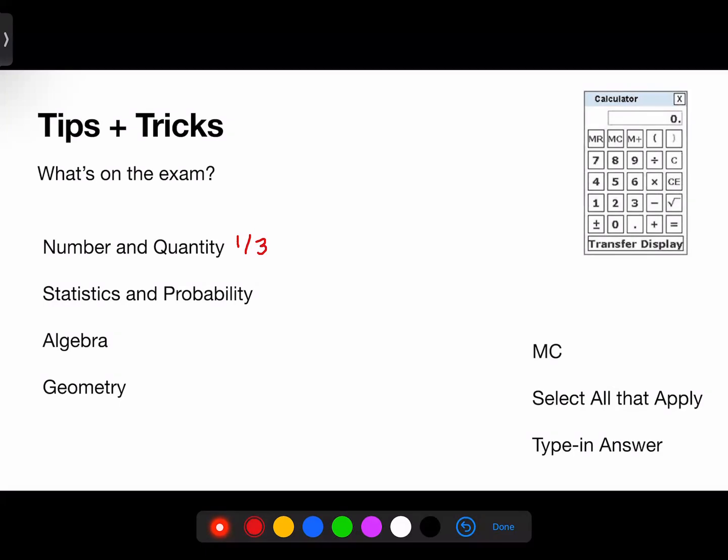Statistics and probability is another one-third of all questions found on the exam. It contains problems about center and spread, data representations, and probability.